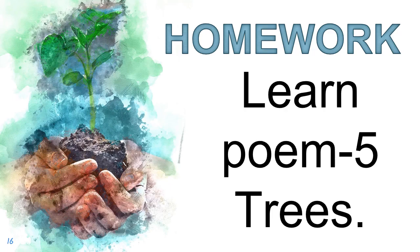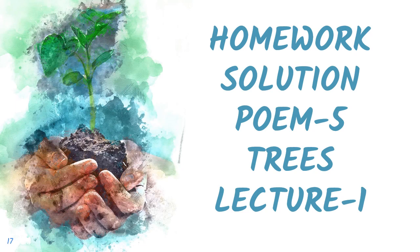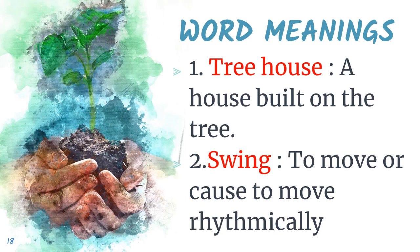Your homework is to learn poem 5, Trees. Now open your fair notebooks, draw margin, and make a proper format. In the format, write down today's date, Poem 5, Trees, your book name Honeycomb, and then write down the heading: Word Meanings. The first word is tree house. Its meaning is a house built on the tree.